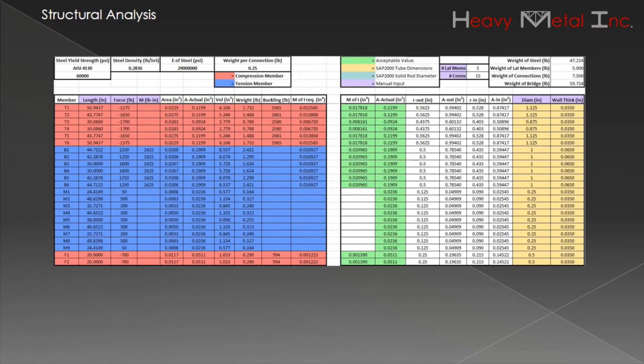We developed a complex spreadsheet to run these calculations for each member of every bridge. This gave us a baseline, which was the minimum weight each bridge could be without failing. From there, we optimized each bridge by increasing cross sectional areas, which in turn increased the weight, but reduced deflection.